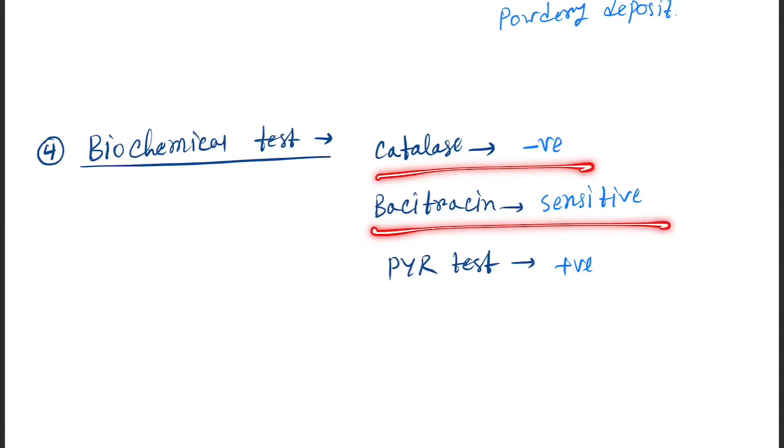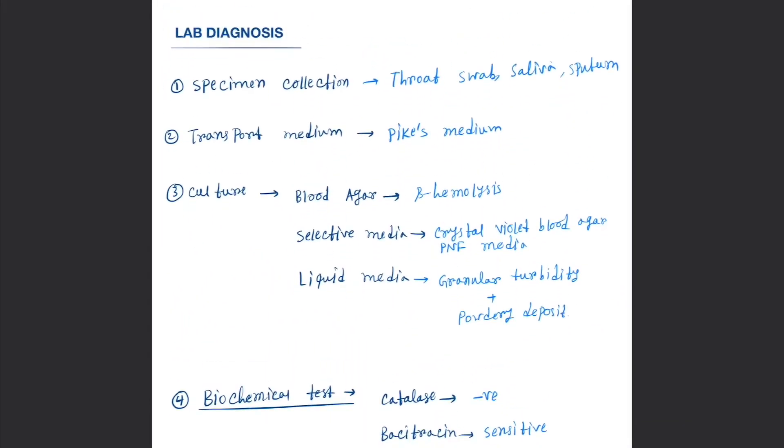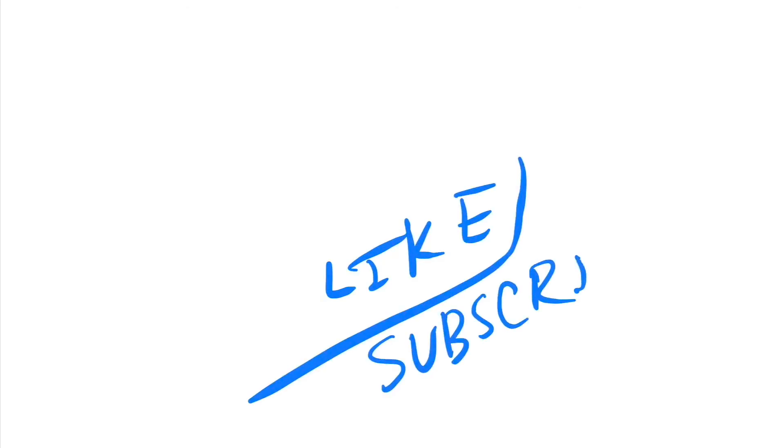Biochemical test: catalase negative, bacitracin sensitive, and PYR positive. This is Streptococcus. Thank you guys for watching this video. If you like this video, then please do not forget to hit the like button and please also do subscribe my channel.